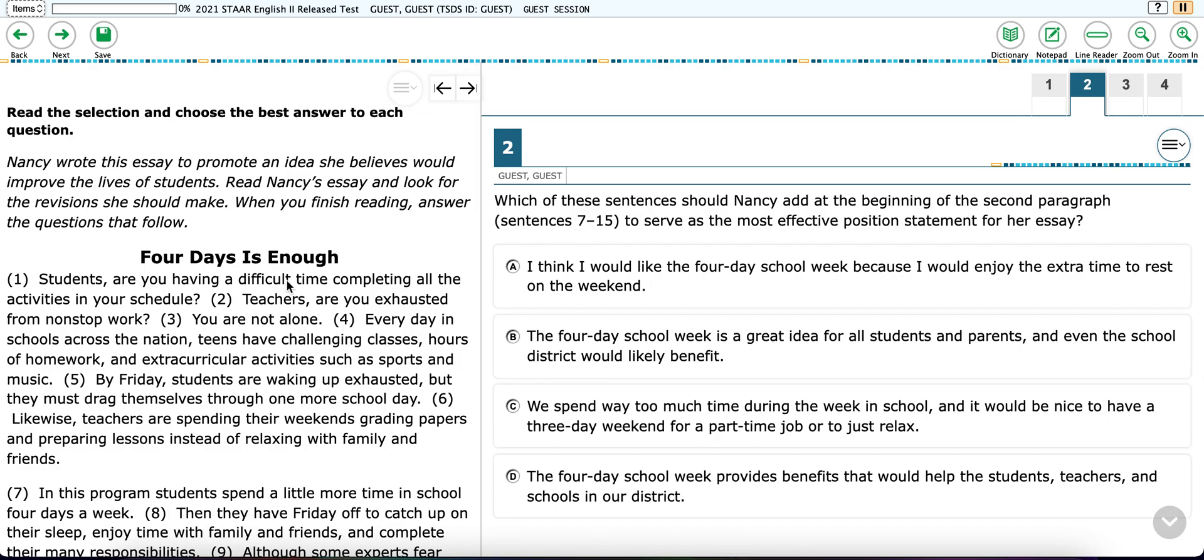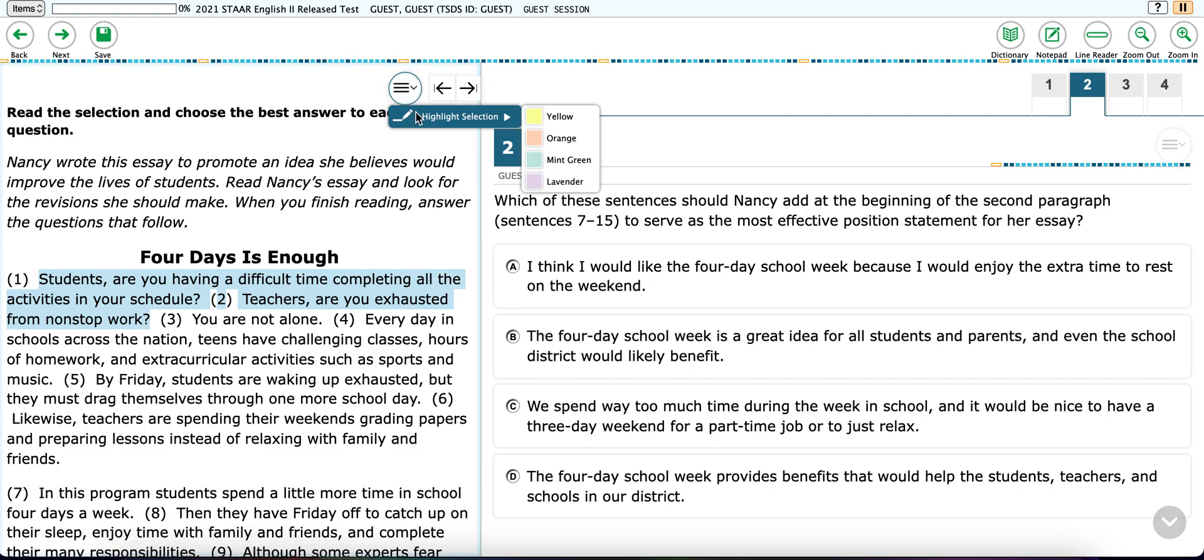Now there is a highlighting feature that you can utilize. Notice it's grayed out right now. On the text side, to be able to highlight, you actually have to highlight what you want. So I highlighted the first two sentences and I can go here to highlight, highlight selection, and choose my color. Now let's say you've highlighted too much or you want to remove the highlight. You simply highlight what you want removed, go back to the highlight section, and do remove highlight.